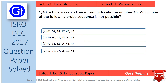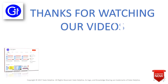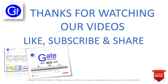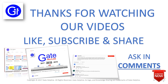As per our explanation, the answer to this question is option D — that is the sequence 17, 77, 27, 66, 18, 43 — which is not possible to locate number 43 in a binary search tree. Thanks for watching our video. Please like, subscribe, and share our videos to appreciate our work. If you have any doubt or question, please comment below.